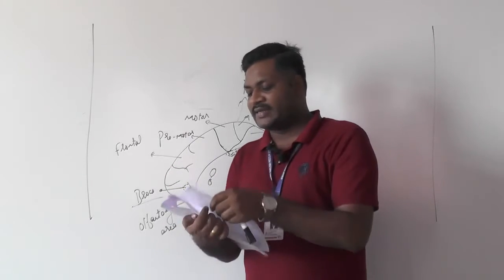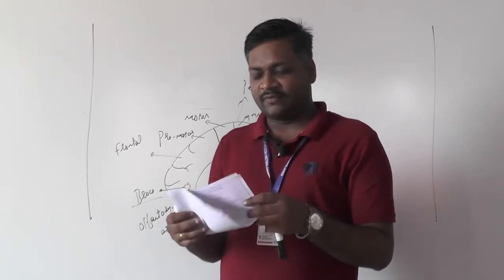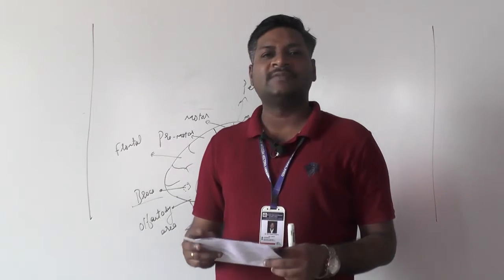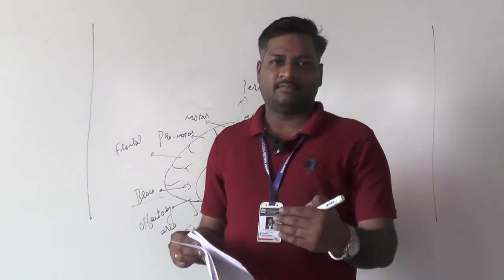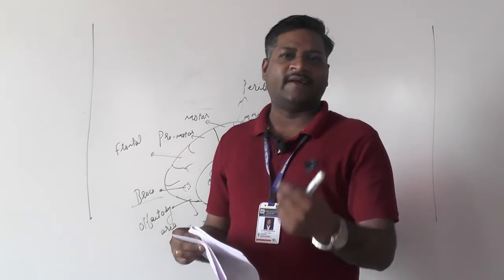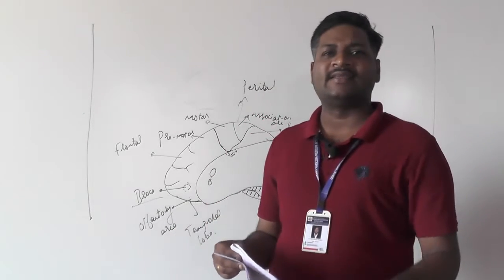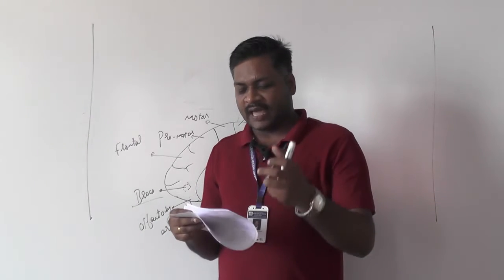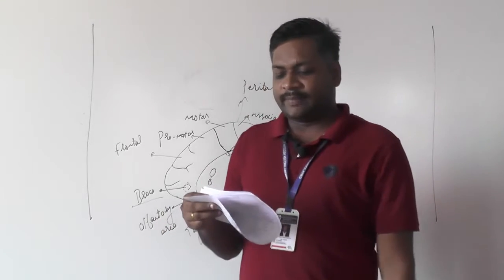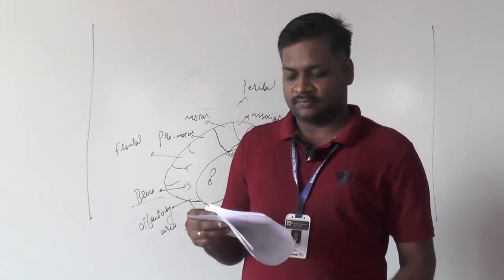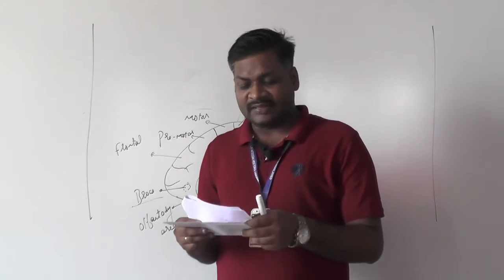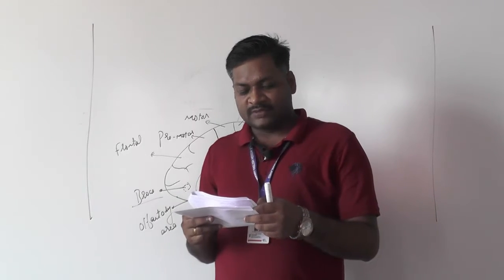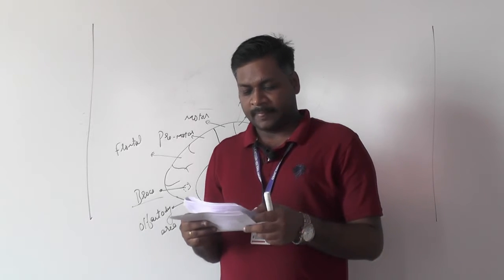Question 107: the cavity in the region of the diencephalon in the brain is called the lateral ventricle. The forebrain has three parts — olfactory lobes, cerebrum, and diencephalon, which comprises the thalamus and hypothalamus. Question 108: the hypothalamus forms the floor of the fourth ventricle.